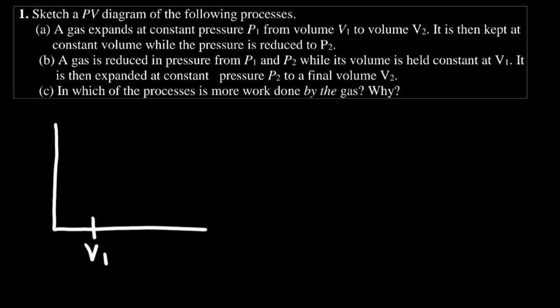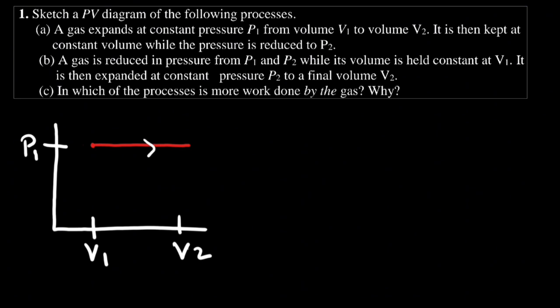We have here volume 1, volume 2, and pressure 1. The gas expands at constant pressure P1 from volume 1 to volume 2. Then at constant volume, the pressure is reduced to P2. So we draw the gas expanding at pressure 1 from volume 1 to volume 2, then a vertical line down to P2.